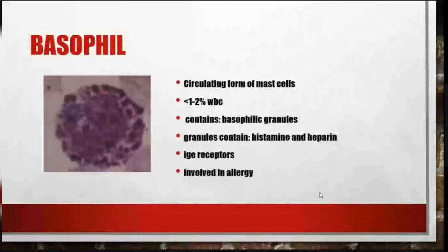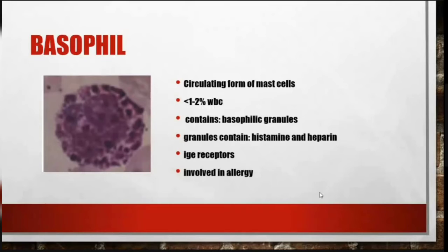Basophils are the circulating form of mast cells and make up less than 1 to 2 percent of WBCs. They contain basophilic granules, which contain histamine and heparin. They have IgE receptors and are involved in allergy.